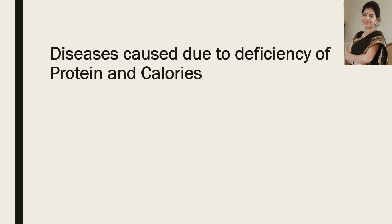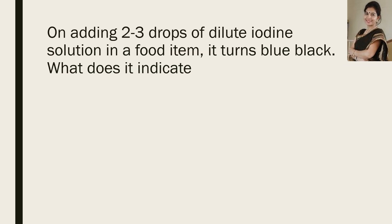Now, the diseases caused due to deficiency of proteins and calories — you have to name the diseases. And the correct answer is kwashiorkor and marasmus. Now, on adding 2 to 3 drops of dilute iodine solution in a food item, it turns blue-black. What does it indicate? It indicates the presence of starch or carbohydrate in the food sample.